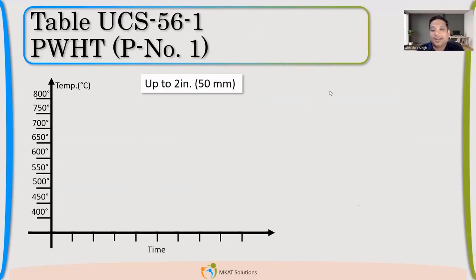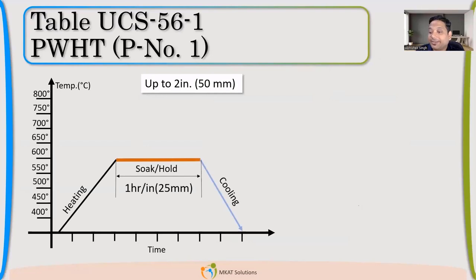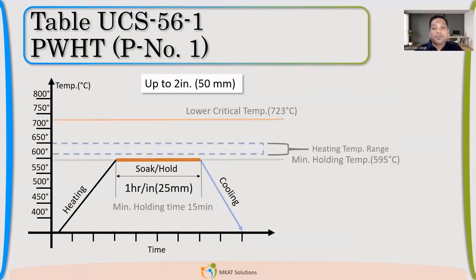Now, coming to your favorite PWHT table. This is for P-number 1. So here we are going to see what is the holding time and what is the holding temperature given for post-weld heat treatment of this P-number 1, where our 516 grade 70 lies. So if you see this figure, my minimum holding temperature...